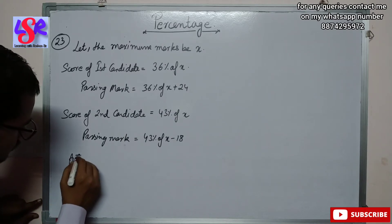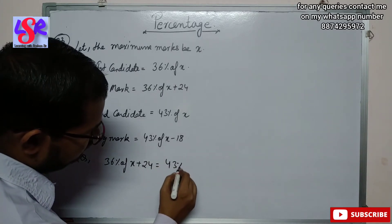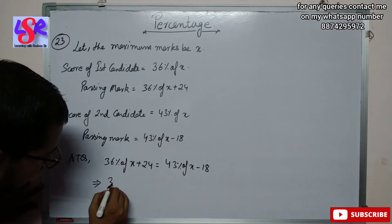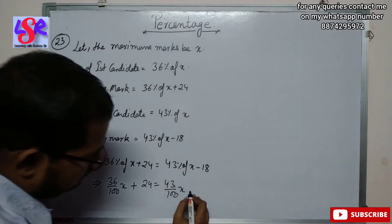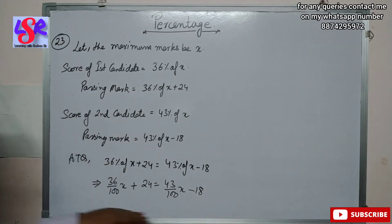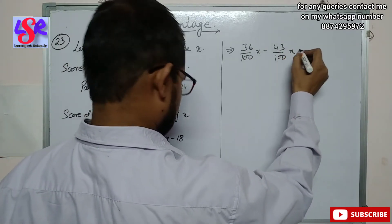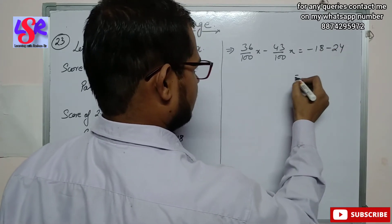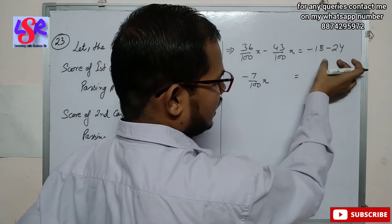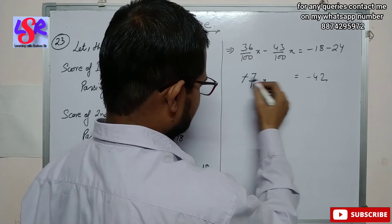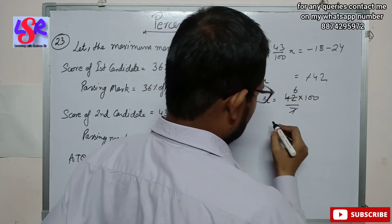According to the question, 36 percent of x plus 24 equals 43 percent of x minus 18. This gives 36 upon 100 x plus 24 equals 43 upon 100 x minus 18. Putting all variables on one side: 36 upon 100 x minus 43 upon 100 x equals minus 18 minus 24. So minus 7 upon 100 x equals minus 42. Cancelling the minus signs, x equals 42 into 100 upon 7, which gives x equals 600.